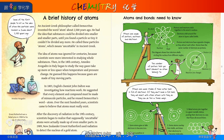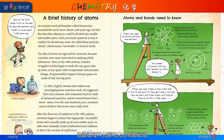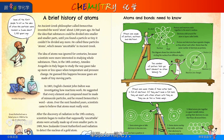And then, in 1803, English chemist John Dalton was investigating how reactions work. He suggested that every element and compound must be made of minuscule particles, and he reused Democritus' word: atom.